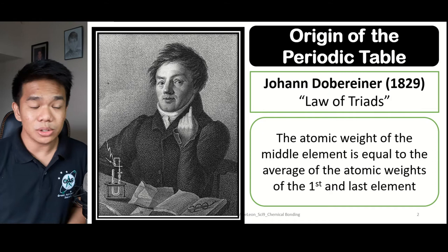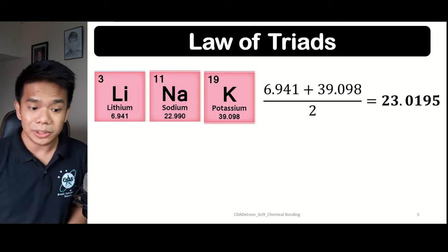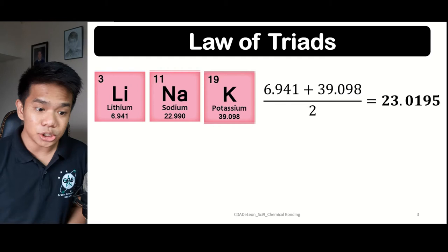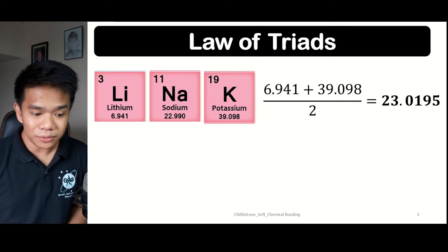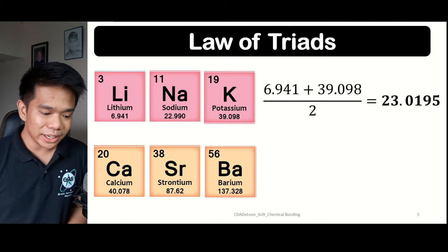Let us try to have an example. We have here lithium, sodium, and potassium. Lithium and potassium are the first and third elements. If we look at the average of their atomic weight, we get a value of 23.0195, which is equal or almost equivalent to the atomic weight of sodium, which is 22.99.